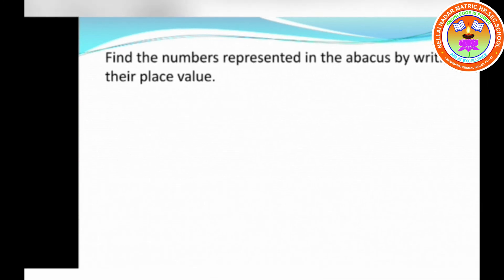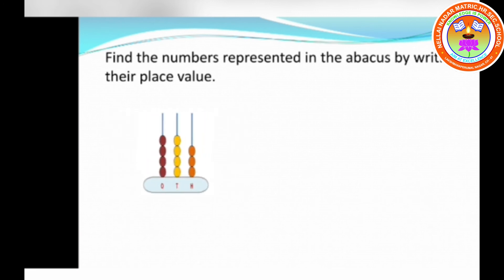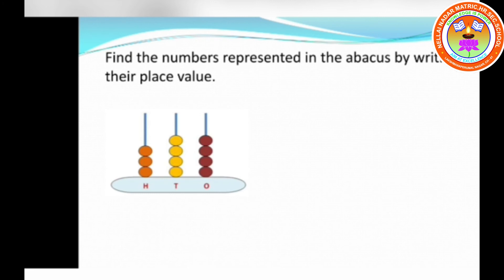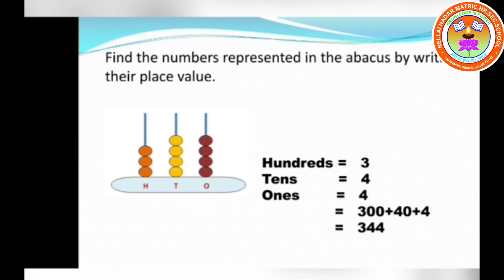Find the numbers represented on the abacus by writing the place value. See the picture: hundreds place has 3 beads, tens place has 4, ones place has 4 — so 300 plus 40 plus 4 equals 344.